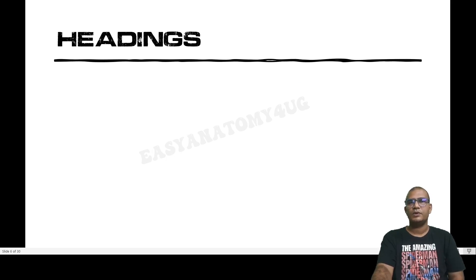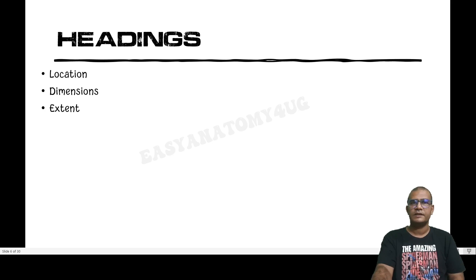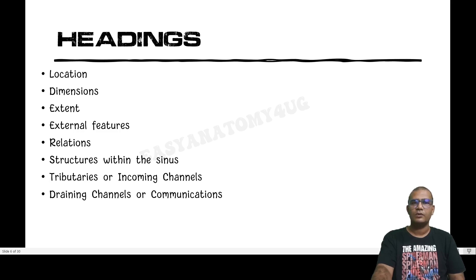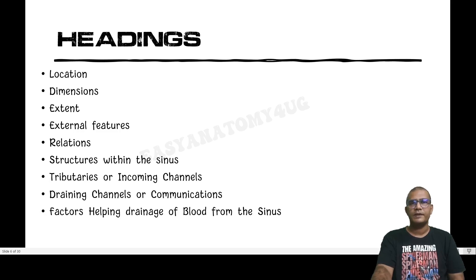For routine practice, we should divide the topic under different headings so it is easy to recall while preparing for theory. The headings for cavernous sinus are: location, dimensions, extent (anteriorly and posteriorly), external features, relations, structures within the sinus, tributaries (incoming channels), draining channels (outgoing), factors helping drainage, and lastly a few points of applied anatomy.